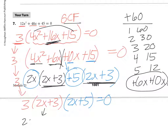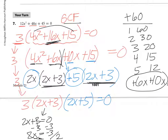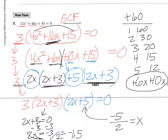All this equals zero, so now I find my solutions. Setting 2x + 3 = 0: subtract 3 and divide by 2, giving x = negative 3/2. The calculator would say negative 1.5. For 2x + 5 = 0: do the opposite — subtract 5 and divide by 2, giving x = negative 5/2. The calculator would say negative 2.5. Note: the calculator gives decimal answers while factoring gives fractional answers.